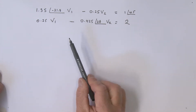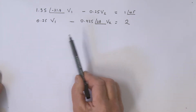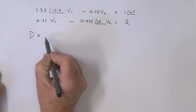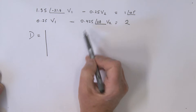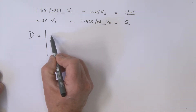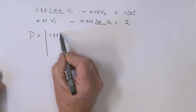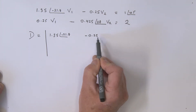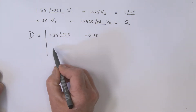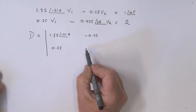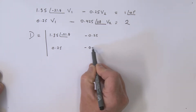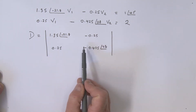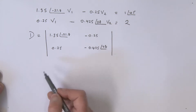I hope you've had a chance to give it a try and see if you could solve this using a determinant approach. Now let's go ahead and do this together. I'm going to write down our determinant D, which is equal to the coefficients of V1 and V2. We have 1.35 at an angle of minus 21.8, a coefficient of minus 0.25, then 0.25, and minus 0.425 at an angle of 28. Let's solve this determinant D and use Cramer's Rule to find V1 and V2.